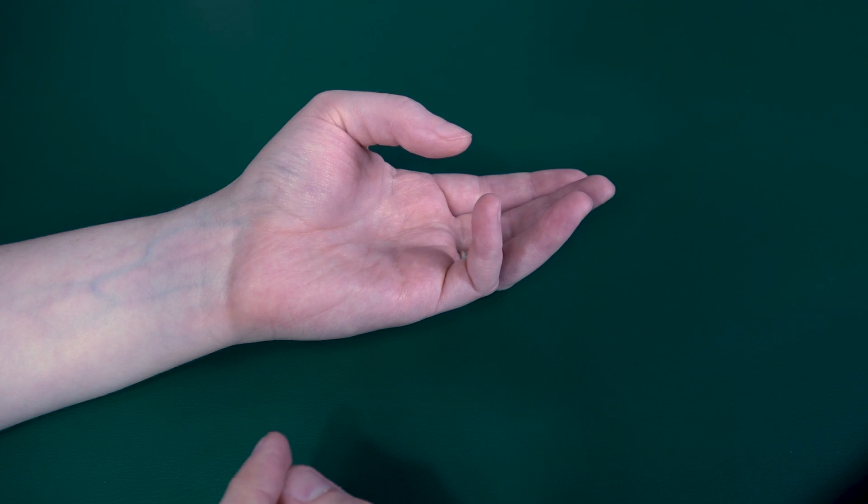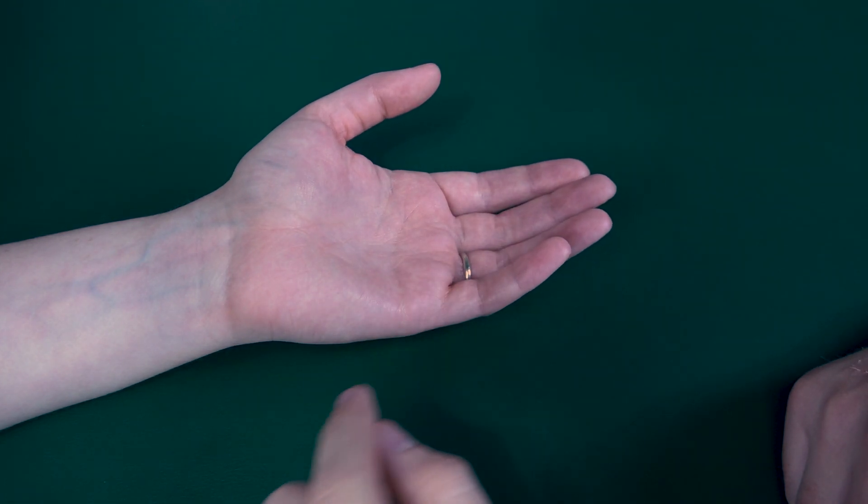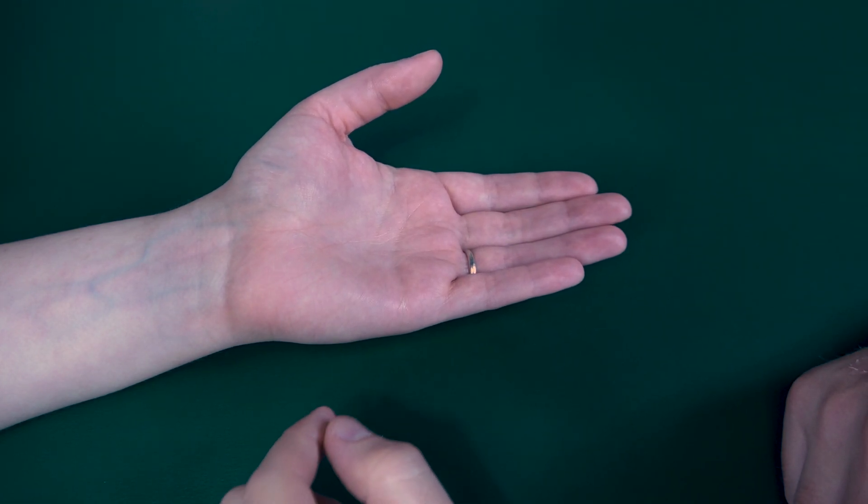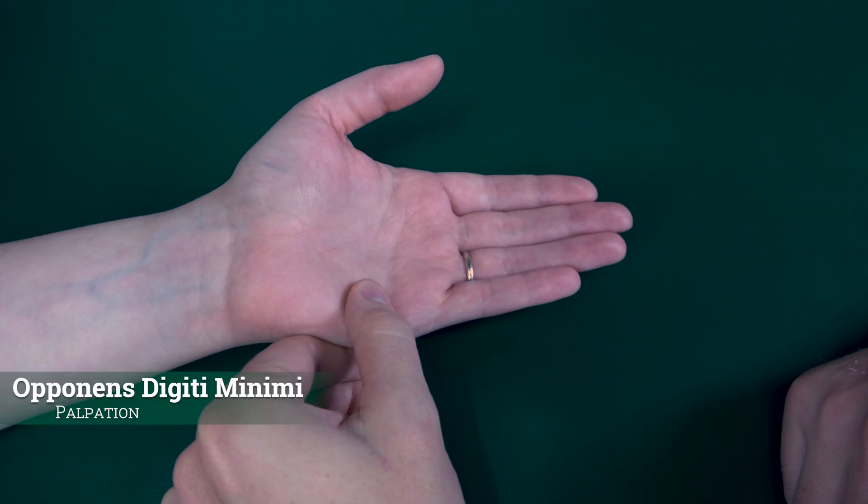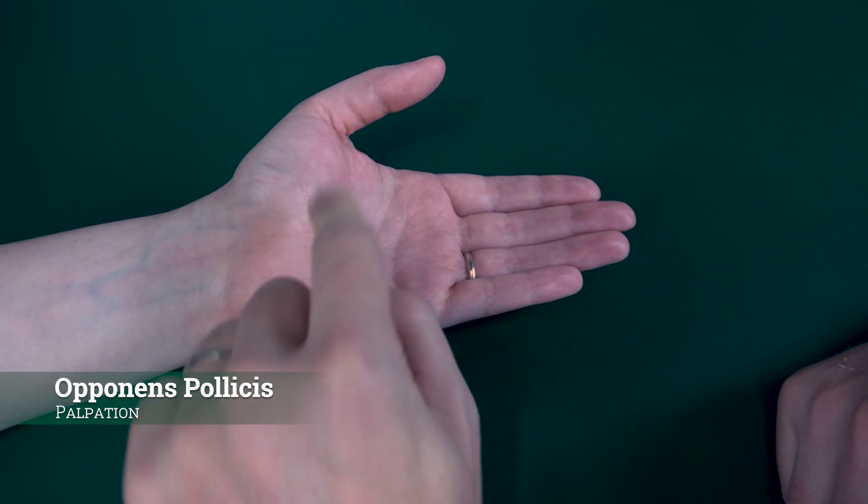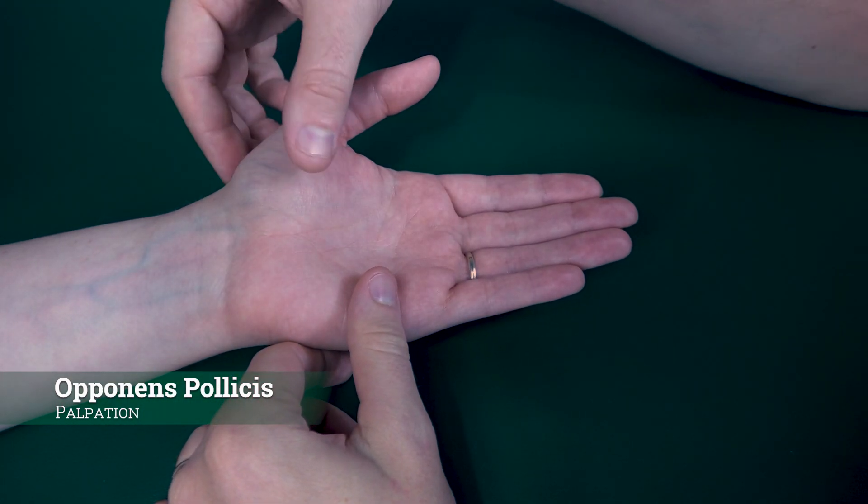And if she cannot perform any range of motion whatsoever, I would palpate for the opponens digiti minimi, which is here, and the opponens pollicis, which is up here on the thumb.